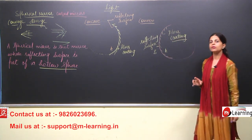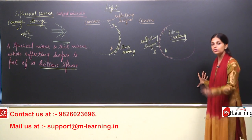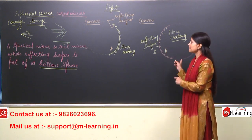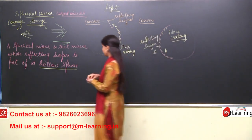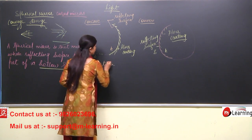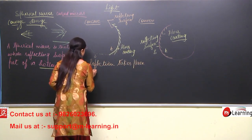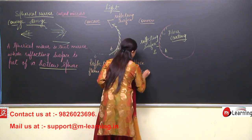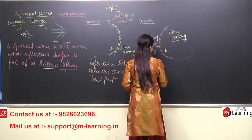So what we are studying is spherical mirrors — they are curved mirrors. Spherical mirrors can be of two types: concave and convex. The key difference is where reflection takes place: in the concave mirror, reflection takes place from the inward bent concave part; in the convex mirror, reflection takes place from the outward bulging part.